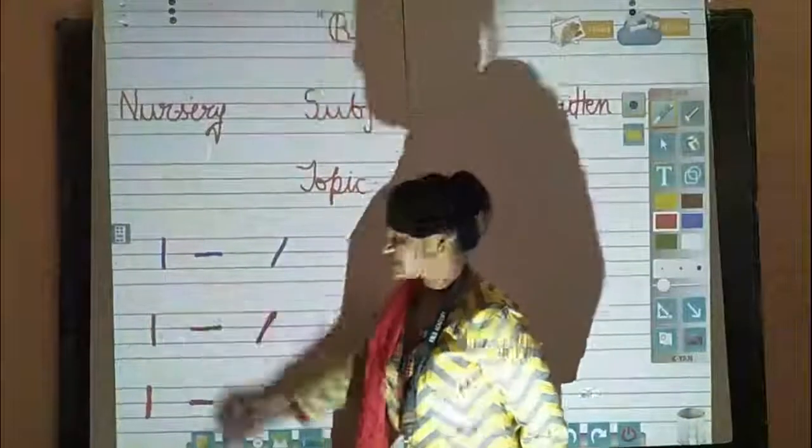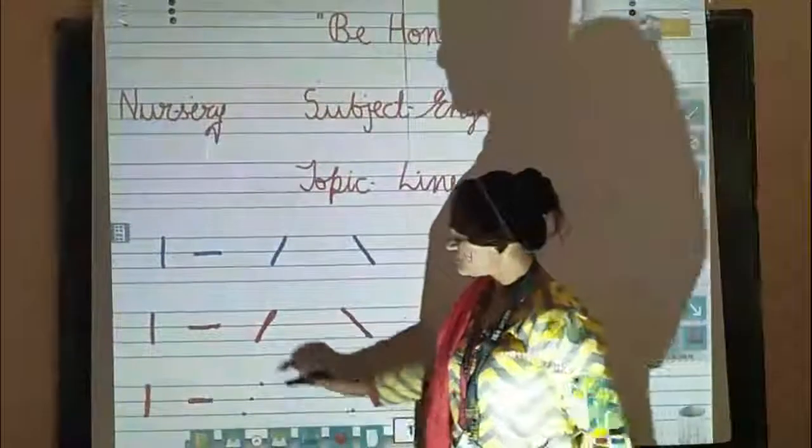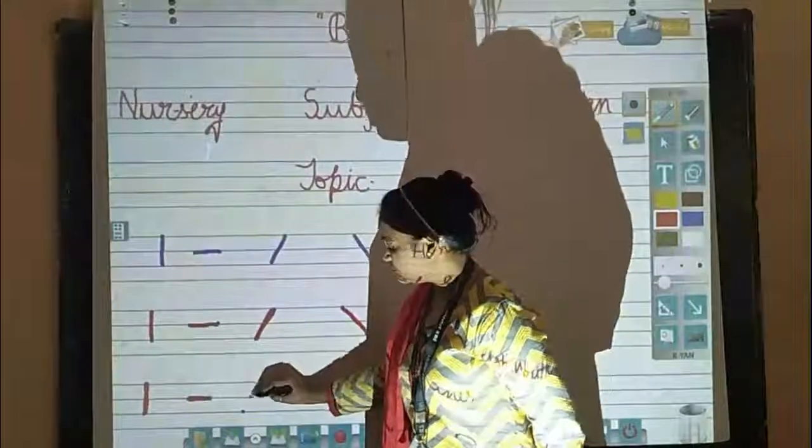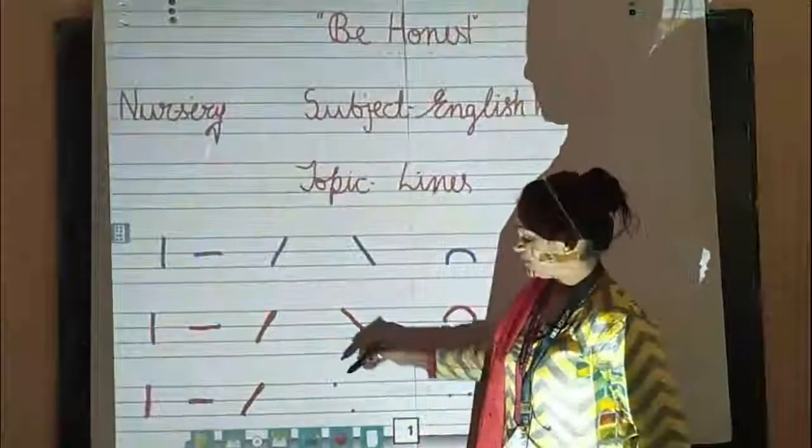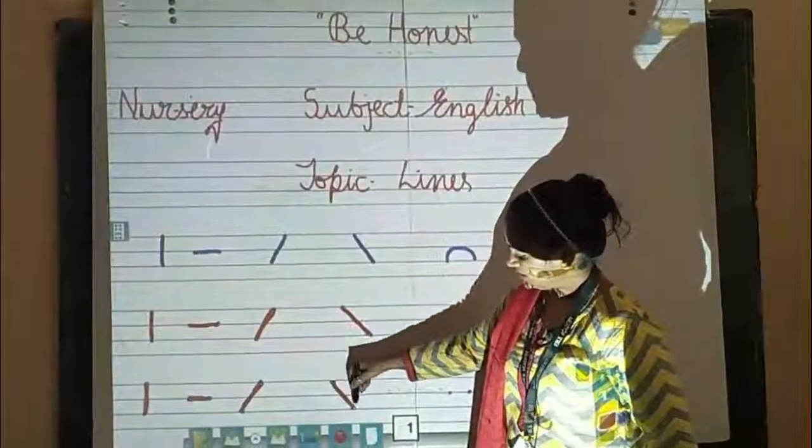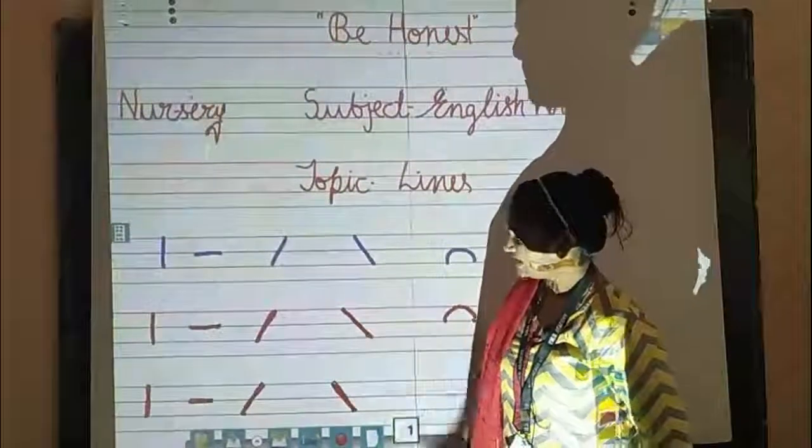Now we have to make a sleeping line. We will go left to right, draw the line. Now we have to make a slanting line. Left to right, make a line. Draw the slanting line.